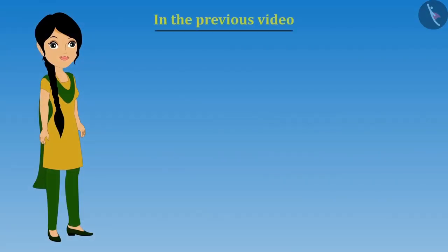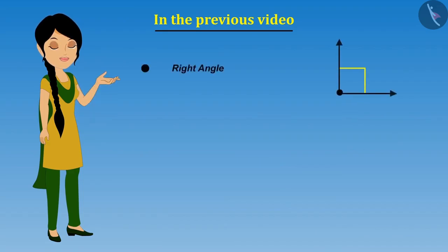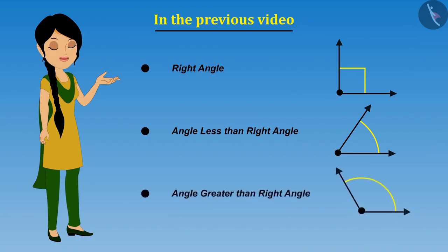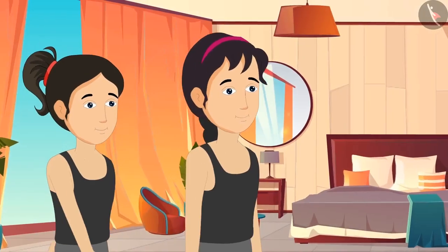Hello friends. In the previous video we learned what a right angle is, what an angle less than a right angle is, and what an angle greater than a right angle is, along with Riva and Meena. In this video we will identify all these angles formed in different objects along with Meena and Riva.